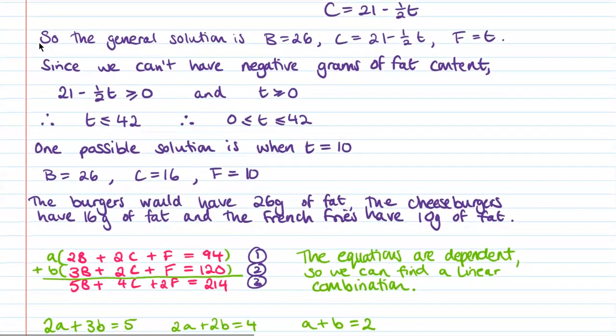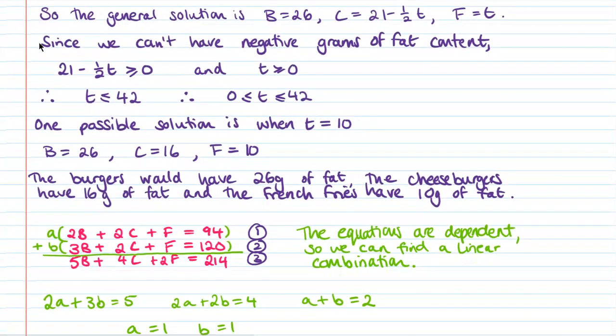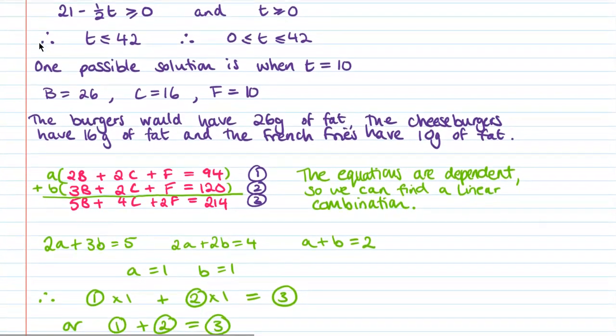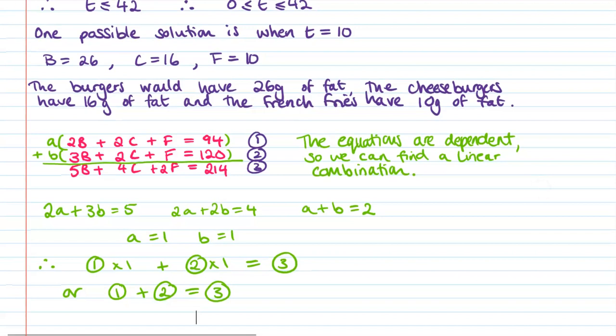I won't talk through it too much in detail here. You can go back and have a look at how we do this. But it's basically looking for what's the pattern that links those three equations together. So you set yourself up a potential linear combination and then you work through what the results of that could be. Now, in this one, it's a fairly simple one, which is that the first two equations, if you add them together, make the third equation. And there's our linear combination.